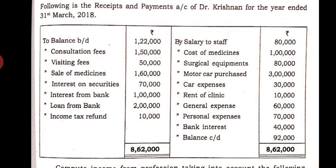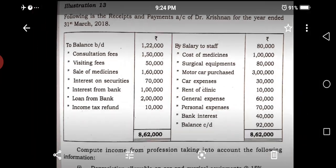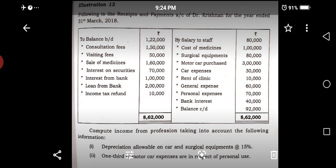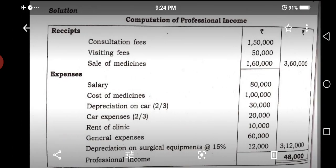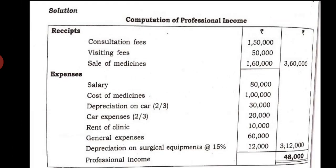Personal expenditure is Rs. 70,000 and bank interest paid is Rs. 40,000. After adding back professional receipts and deducting allowable professional expenses, the professional income comes to Rs. 48,000. Note down this problem and the solution and check yourself.